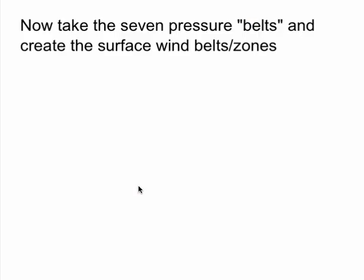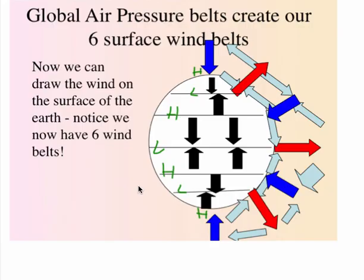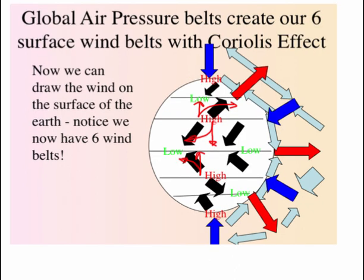Now let's take those pressure belts and create the wind. Wind always moves from high to low. So if it's low pressure at the equator and high pressure here, air will be moving from high to low. Now we're going to take these surface wind movements and turn them due to the Coriolis — to the right in the north, or left in the southern hemisphere.